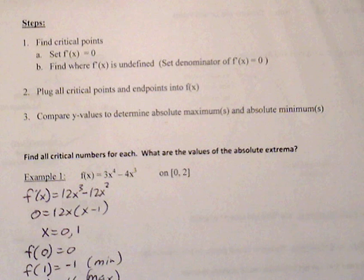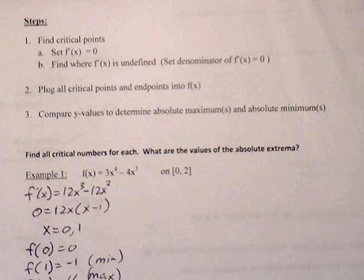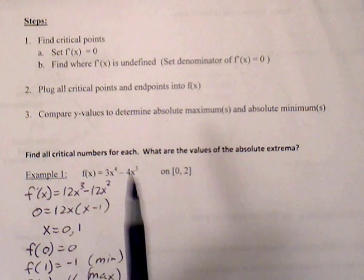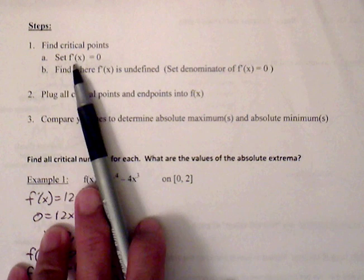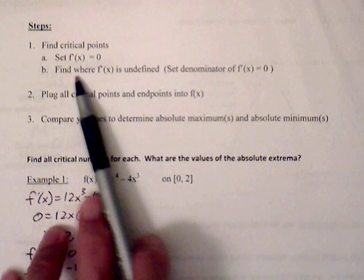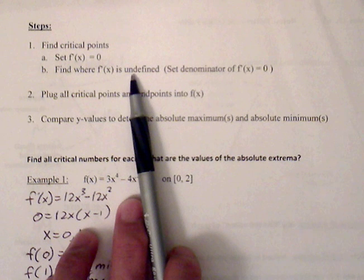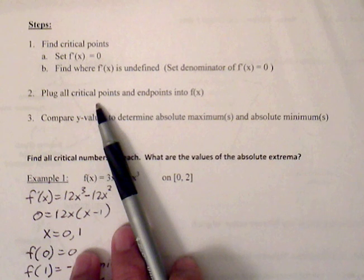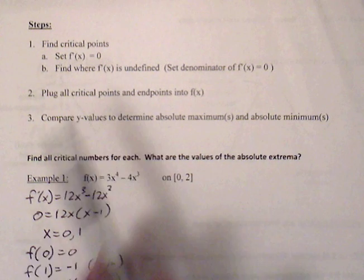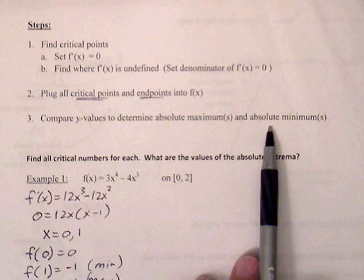Here are the steps to apply the Extreme Value Theorem. We want to test all the x-value candidates and plug them into the function to determine whether there is a maximum or minimum. First, find critical numbers — find the derivative, set the derivative equal to zero, and if there is a variable in the denominator of the derivative, set that portion equal to zero as well, since a sharp point or undefined derivative is also a potential max or min. Next, plug all critical points and endpoints into the function. Finally, compare the y-values to determine the absolute max and absolute minimum.